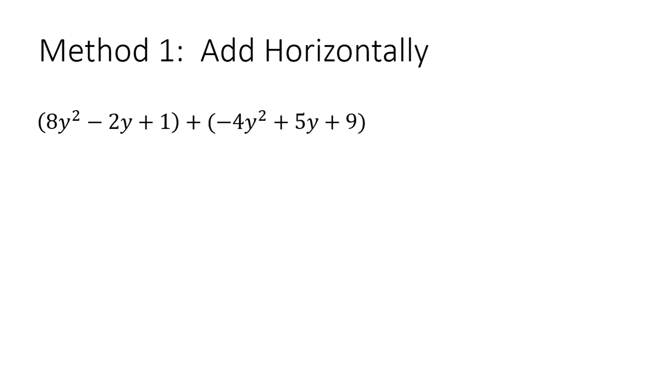Right now, I have two polynomial expressions that are already in the horizontal form. The first step is to identify the like terms, and I highlighted them in the same color. So 8y² and -4y² are like terms, -2y and 5y are like terms, and 1 and 9 are like terms.